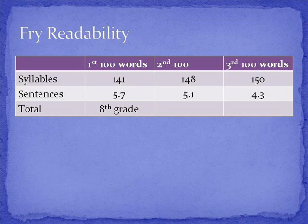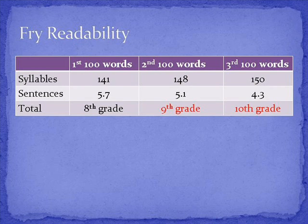So let's pretend that we did two more 100 word selections in the storm chapter and got the following data. Using the Frey graph, what is the reading level score for the 2nd and 3rd 100 words? Pause the clip to find the answer. You should have found that the data for the 2nd 100 words is 9th grade reading level, and the data for the 3rd 100 words shows 10th grade reading level.